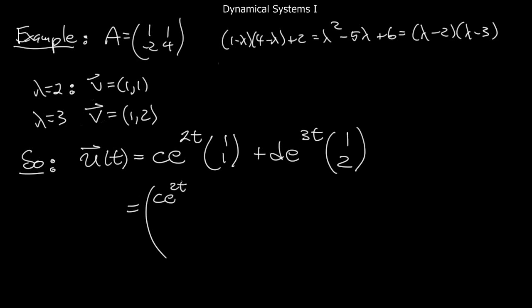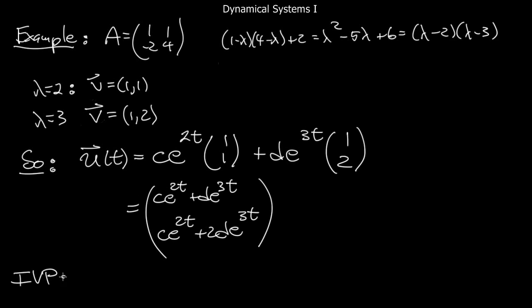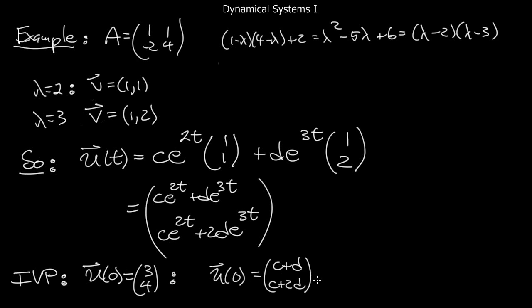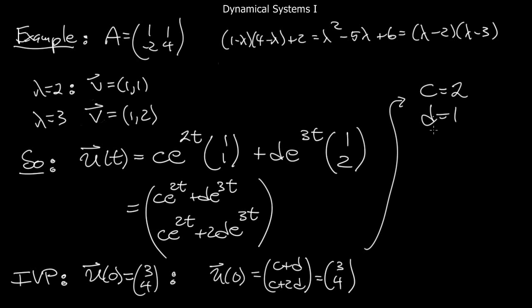So the general solution is u(t) = c·e^(2t)·[1, 1] + d·e^(3t)·[1, 2]. For a typical initial value problem, suppose u(0) = [3, 4]. Plugging in t=0: u(0) = [c+d, c+2d] = [3, 4]. Solving this system gives c = 2 and d = 1.